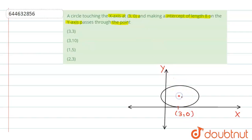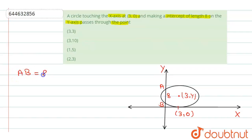The x-coordinate of the center is 3. Let us take the y-coordinate as y. This is the center of the circle. The circle makes an intercept of length 8, so this length AB equals 8, where A and B are the two points on the y-axis.